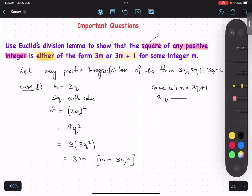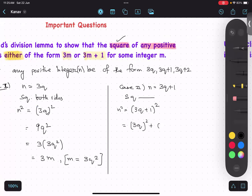Now squaring both the sides, N square equals to 3Q plus 1 whole square. Use identity A square plus B square plus 2AB. 9Q square plus 1 plus 6Q. Now I am keeping in order, 9Q square plus 6Q plus 1.